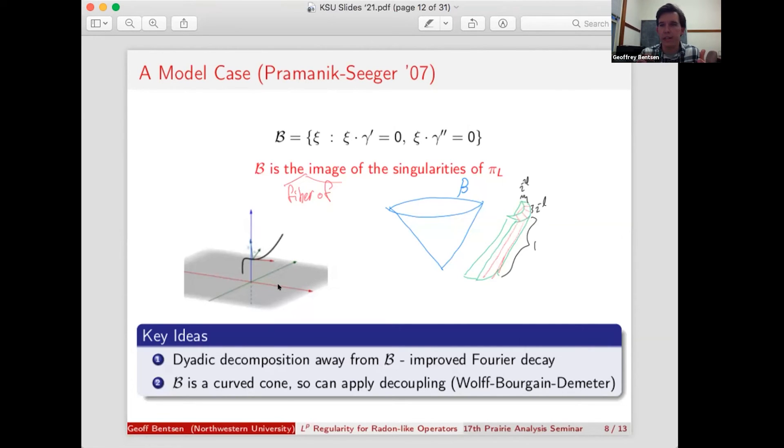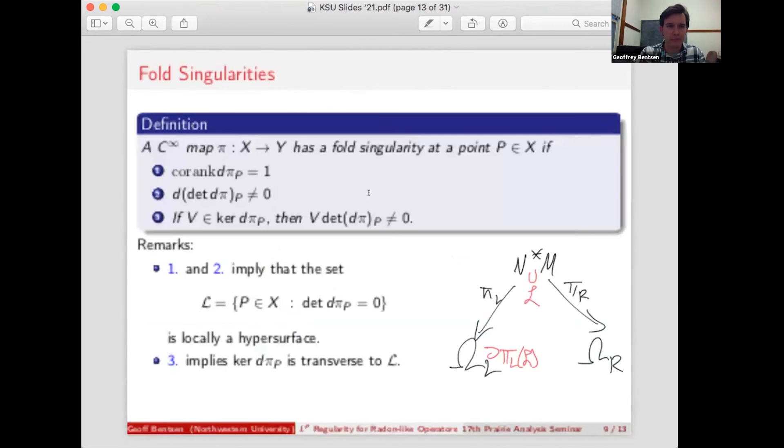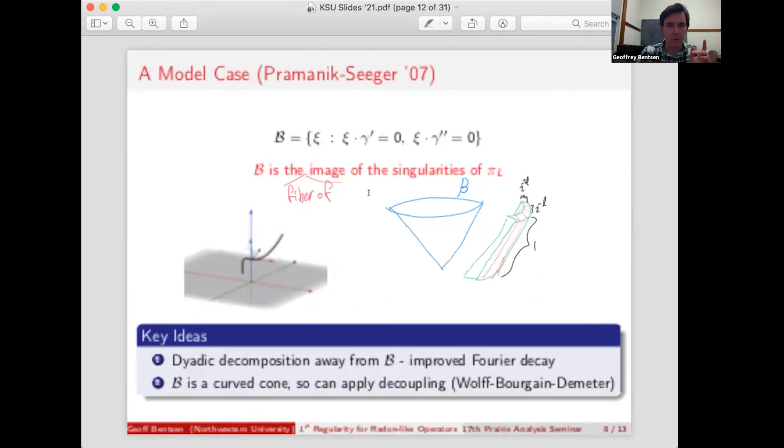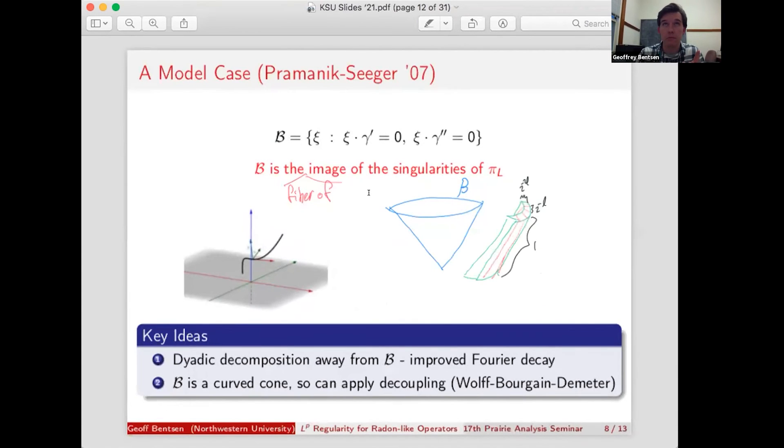And there's one additional wrinkle that I didn't mention on the slide, which is that because this is a convolution kernel, it's translation invariant, which means the fibers of these singularities are actually all the same. Whereas in general, for a generic local radon-like operator, these fibers are going to be shifting with X. And so you won't get everything sitting on top of each other nicely, which makes things harder.